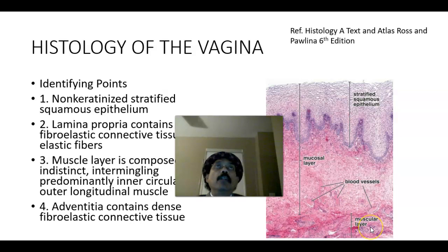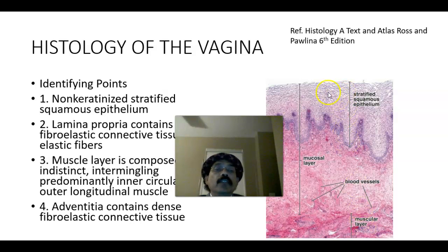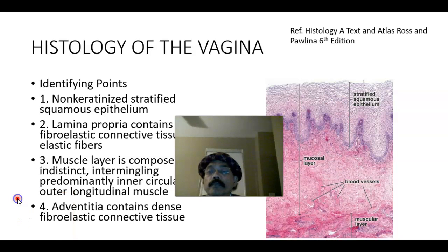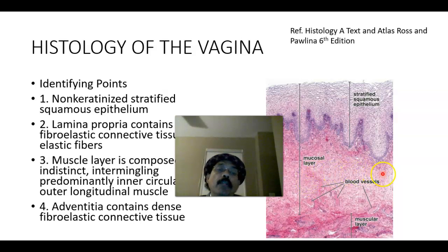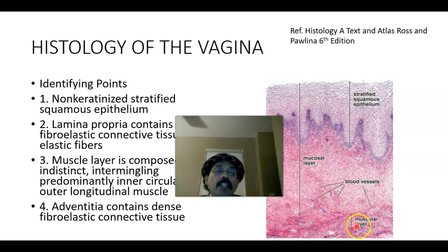Outside the inner circular layer is the outer longitudinal muscle layer. Outside the muscle we get the adventitia. The lamina propria is a loose fibroelastic connective tissue that contains a lot of elastic fibers and blood vessels. Deep to the muscle, outside the muscle, we get the adventitia.